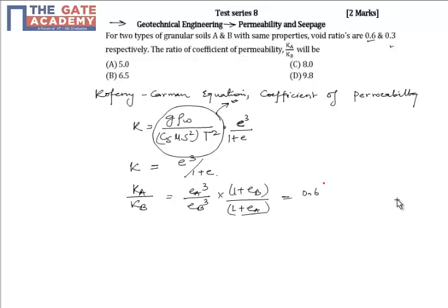0.6 cubed divided by 0.3 cubed, as void ratio of A is 0.6 and B is 0.3, into 1 plus 0.3 divided by 1 plus 0.6. This gives the value to be 6.5, hence B is the correct answer.